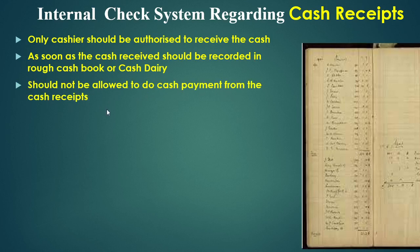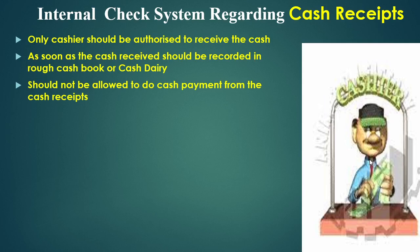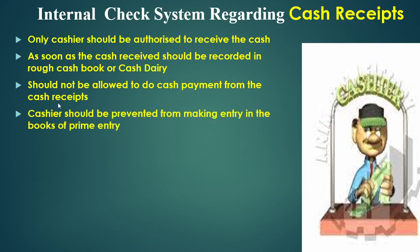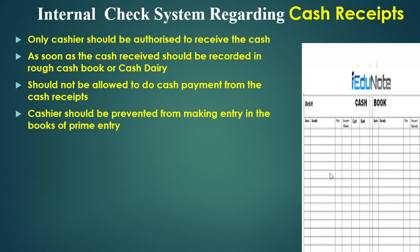The third tip is that the cashier should not be allowed to make cash payments from the cash receipts — the cashier in the receiving role is not responsible for making payments. The fourth tip is that the cashier should be prevented from making entries in the books of prime entry, such as journal entries or ledger accounts. The cashier should only record entries in a rough cash book; there should be a separate accounting person for the cash book entries.